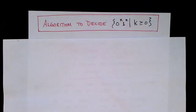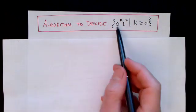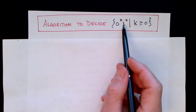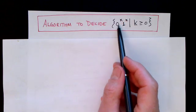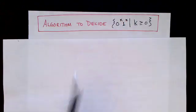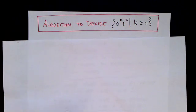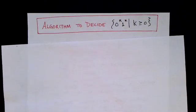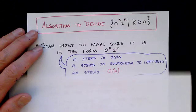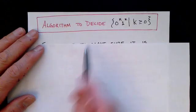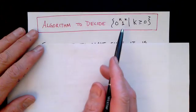The problem we're going to look at is deciding this language. We have a number of zeros followed by a number of ones, and the number of zeros should be equal to the number of ones. So we have to come up with an algorithm that will look at its tape and determine whether the symbols on its tape are in this language, by counting the number of zeros and comparing it to the number of ones.